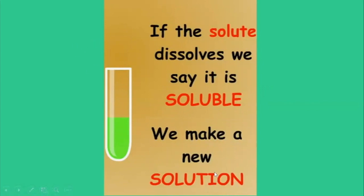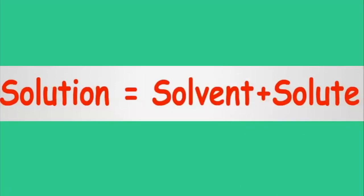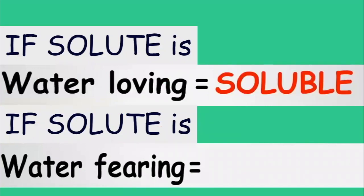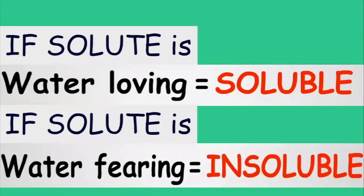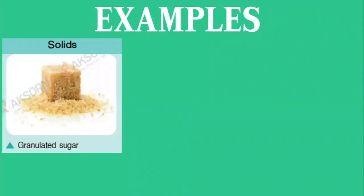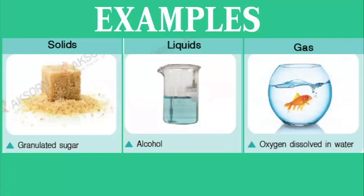If the solute is water-loving, it's soluble. If the solute is water-fearing, it's insoluble. Repeat after me: soluble and insoluble. Solutes that dissolve in water can be solid, liquid, and gas. Examples: solid solute is granulated sugar, liquid is alcohol, and gas is oxygen dissolving in water. Soda water is also a good example of a gas dissolving.